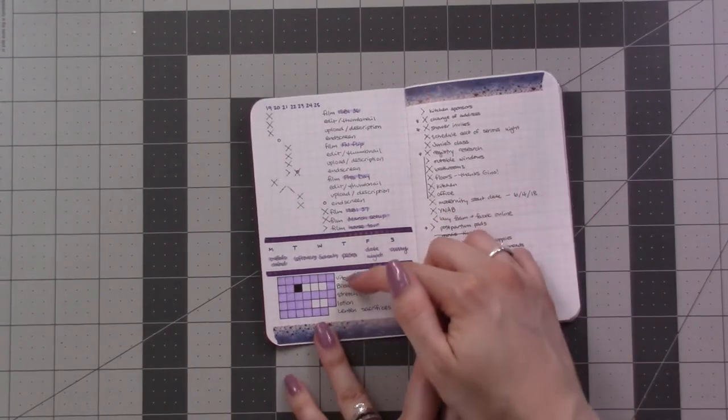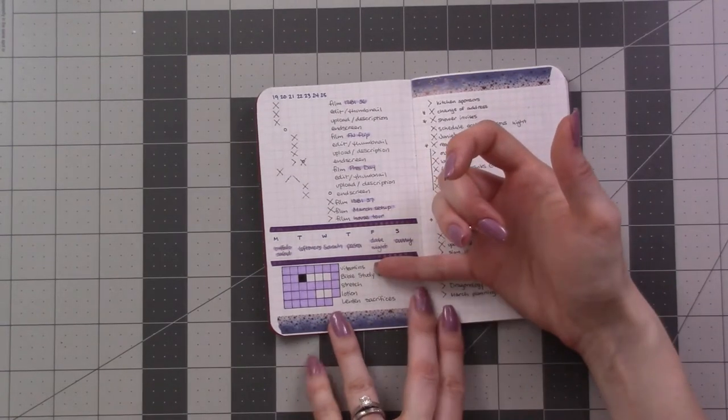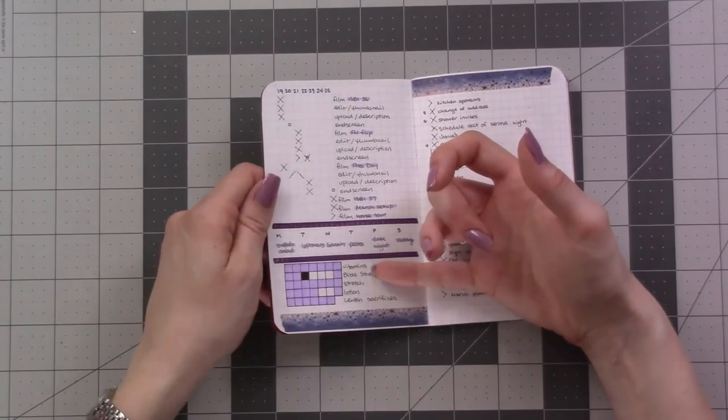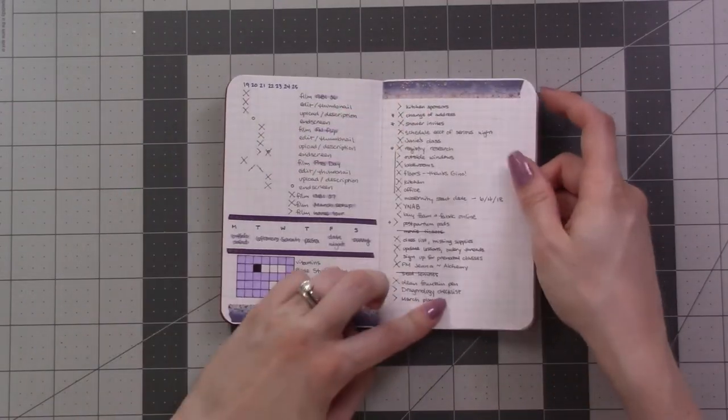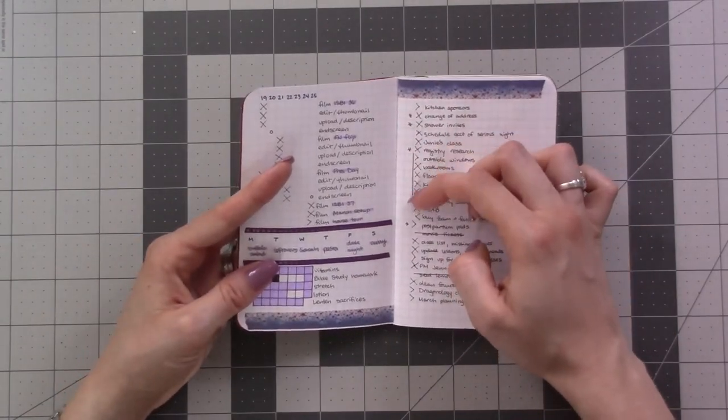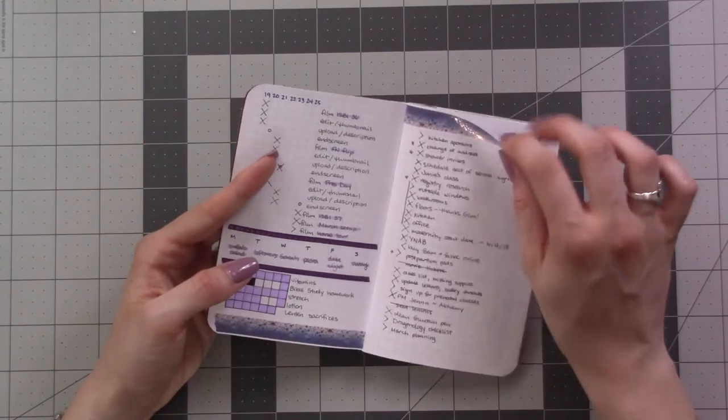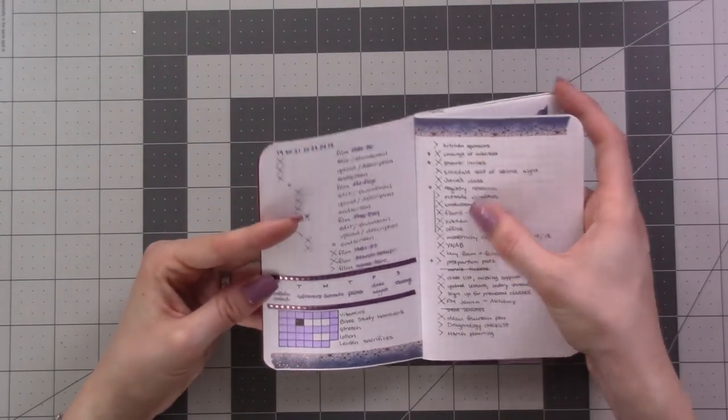And then this is just a standard habit tracker. This is a weekly to-do list. These things that I put the stripe next to were chores around the house or things I needed to clean, and I wanted them to sort of stand out so that I knew not to worry about them when I wasn't at the house.